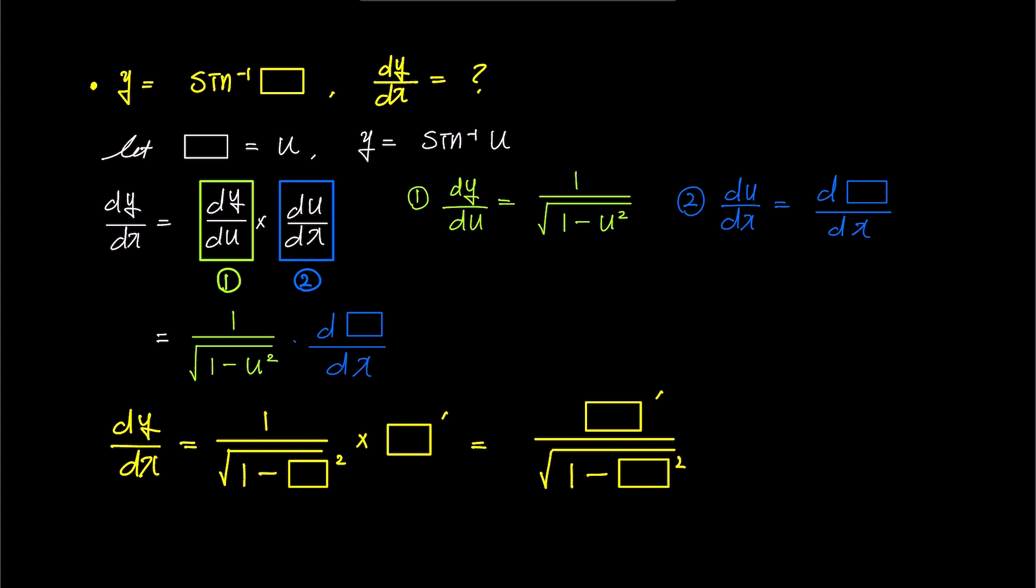Let's work through a simple example together. Here, we have inverse sine of 4x squared minus 7x.